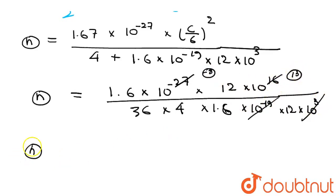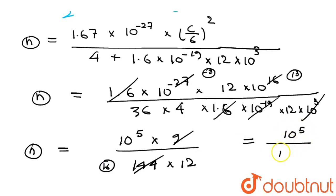n will be 1.6 cancels, so 10⁵ times 9 over 144 times 12. After canceling 16 times, 10⁵ over 16 times 12. This is 10⁵/192, approximately. Our answer will come to 520 revolutions.